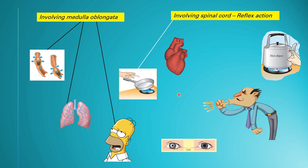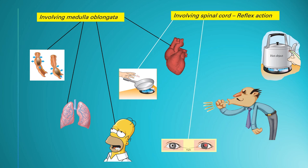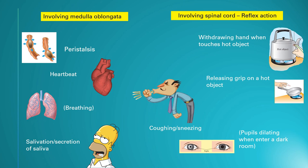Releasing the grip on a hot pen or letting it go is a fast, one-time action — it is a reflex action. The heartbeat involves the medulla oblongata as it keeps us alive and happens 24 hours a day. The pupils dilating is a one-time immediate response when you enter a dark room — this is a reflex action. Sneezing or coughing is also a reflex action as it protects you by pushing out what has entered your nose or throat.